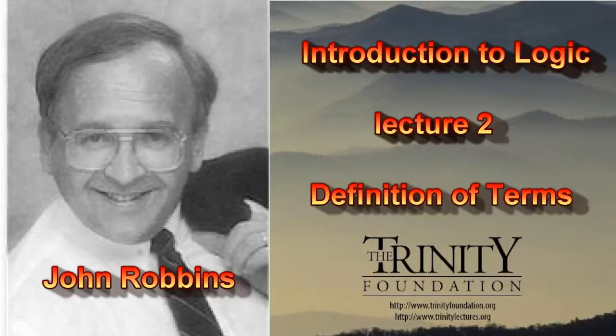We assumed in the argument that you cannot complete the induction — you cannot observe all the geese. But suppose you have a small number of things, like the chairs in this room, and you can observe all of them. We call that in logic a 'complete induction,' and then you can make a statement such as 'all the chairs in this room are white; x is a chair in this room; therefore x is white.' A complete induction is essentially the same as a deduction, but it's usually impossible to complete an induction.